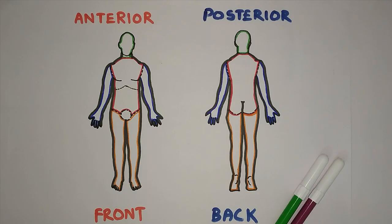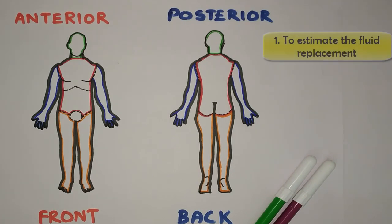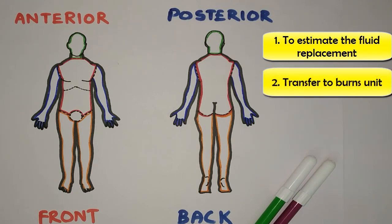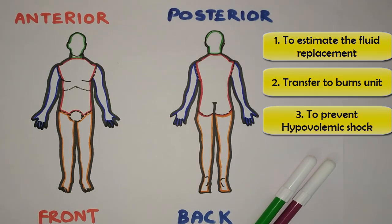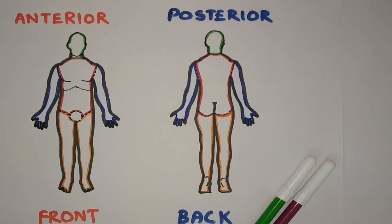It is also known as the Rule of Nines. Why do we need to use this formula for the burn patient? There are three main purposes: the first one is to estimate the fluid replacement or fluid resuscitation; the second one is to transfer the patient to the burn unit; and the third, most important, is to prevent hypovolemic shock, because there will be more loss of fluids seen with the burn patient.